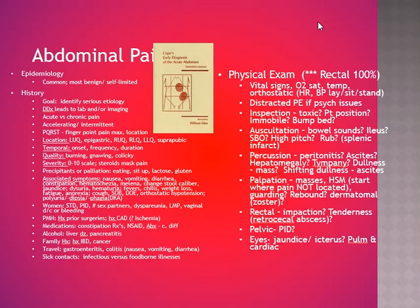On physical exam, poke the area that is not hurting first to identify the source of pain. On inspection, see if the patient looks toxic and observe their position of comfort. Test for peritoneal signs by bumping the bed. On auscultation, listen for bowel sounds and ileus — high-pitched bowel sounds are notable. Percussion for peritonitis, ascites, and shifting dullness in end-stage liver disease. Palpation for masses, hepatosplenomegaly, guarding, and rebound; look for dermatomal patterns such as herpes zoster. Rectal exam: feel for impaction, tenderness, and retrocecal abscess. Pelvic exam for pelvic inflammatory disease. Check the eyes for jaundice or icterus. Perform a pulmonary and cardiac exam as well.